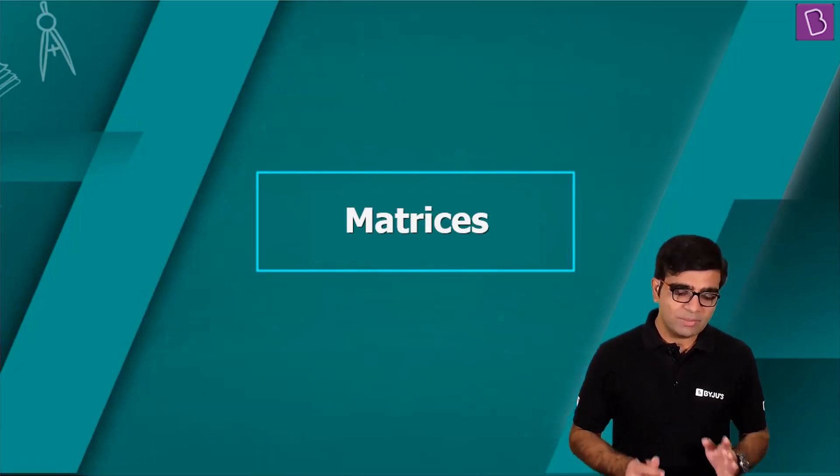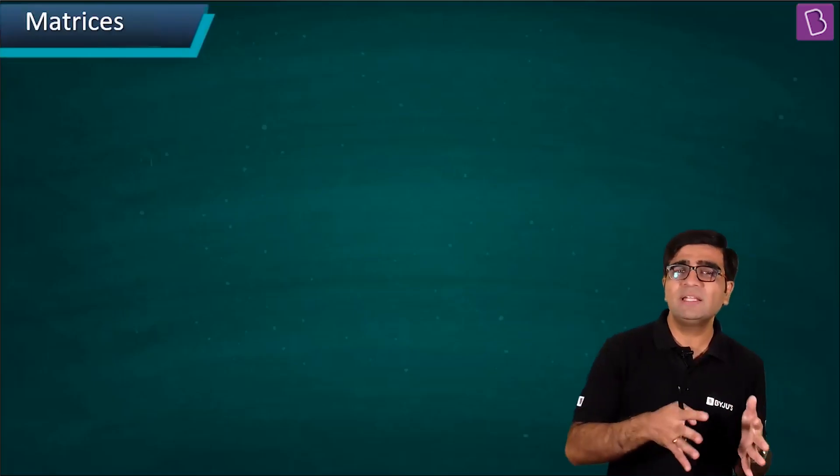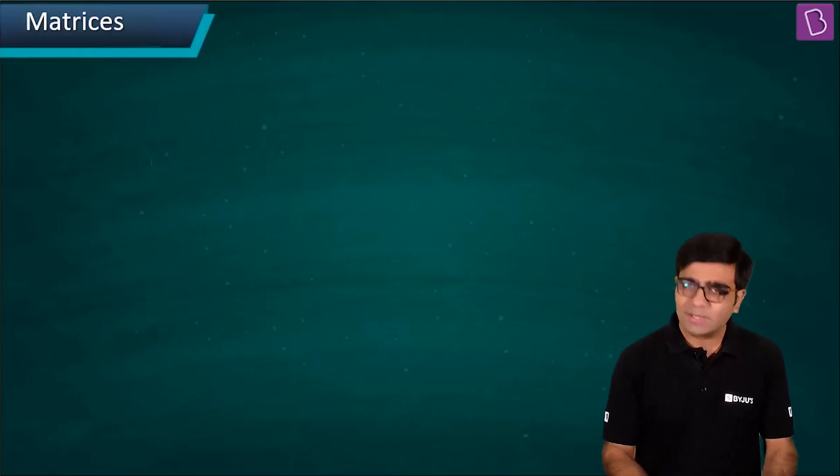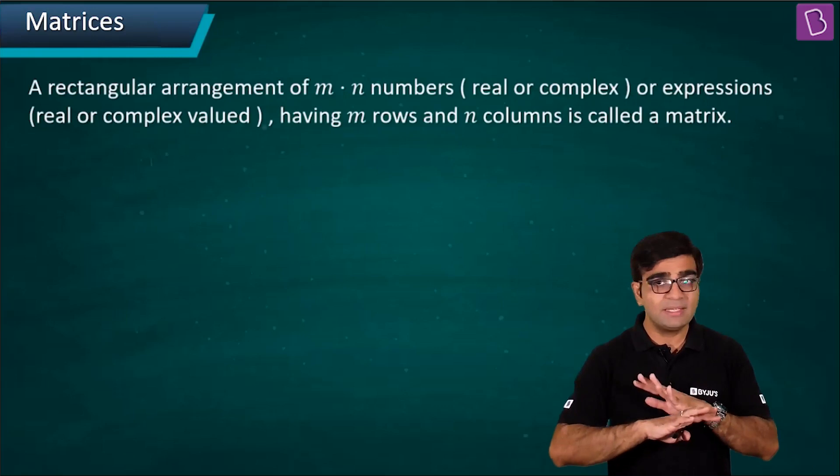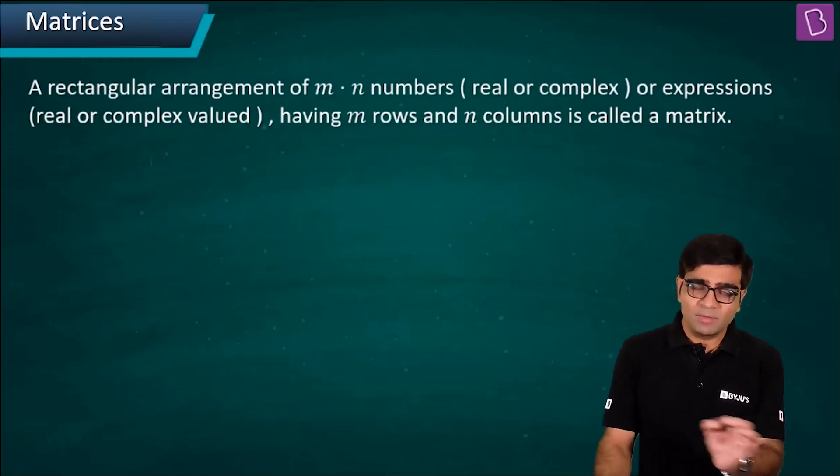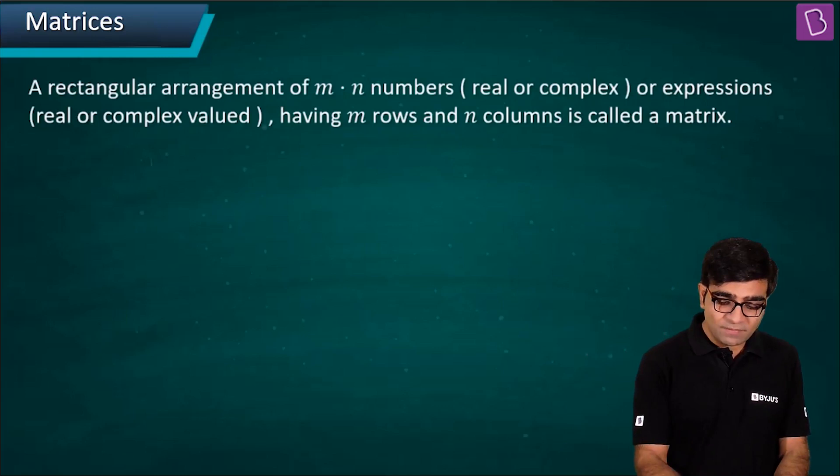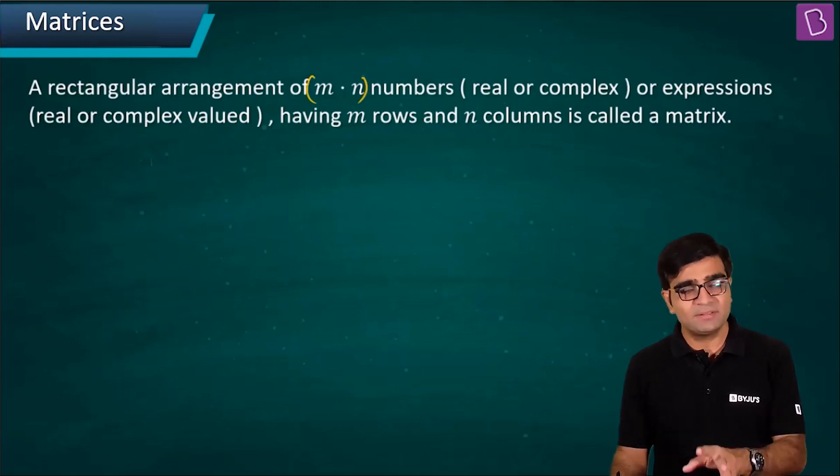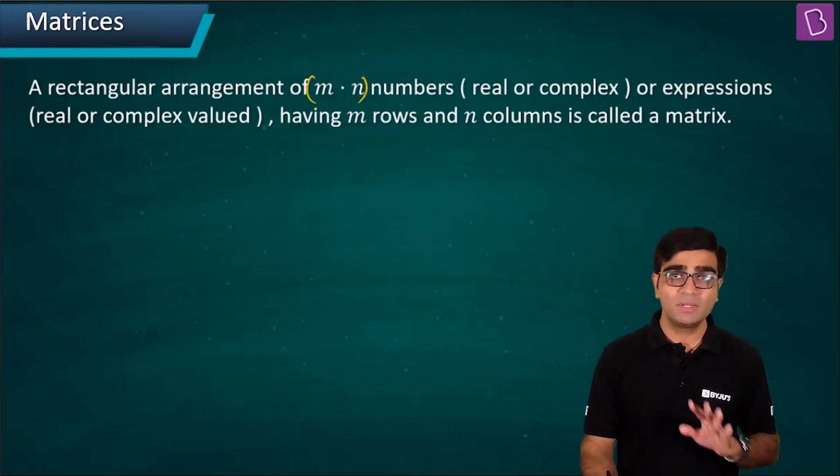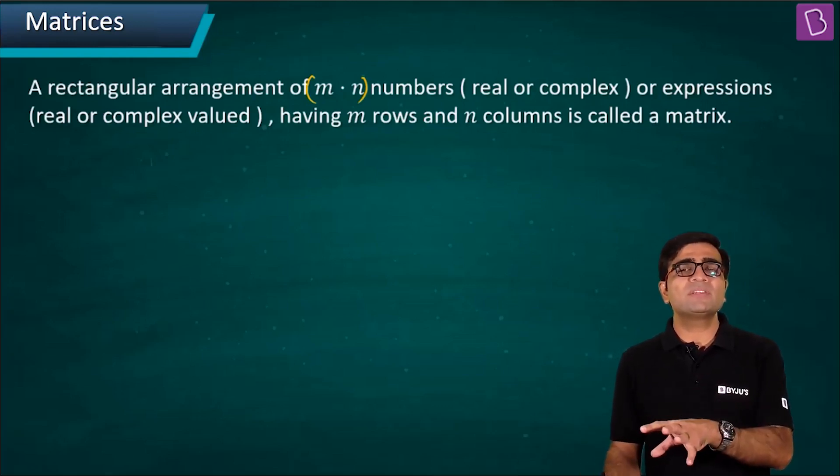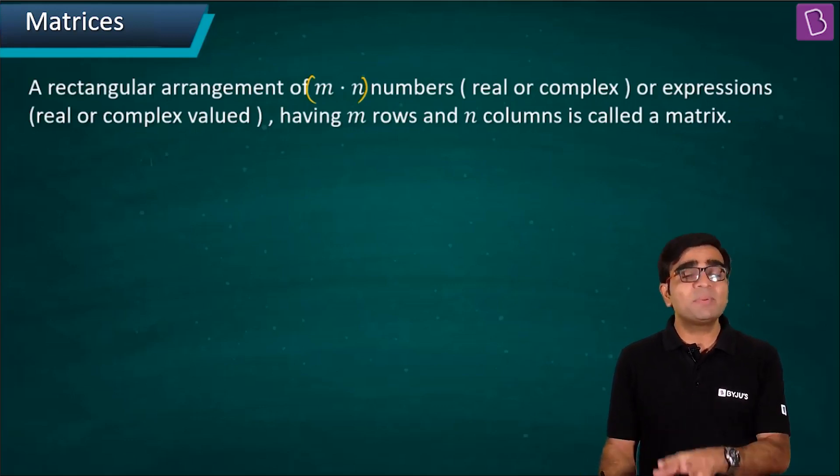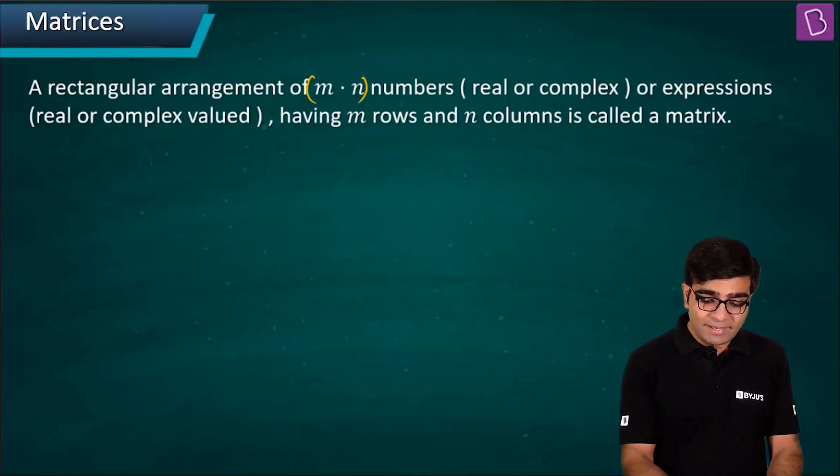Let's see the proper definition. It's the two-dimensional representation of the data set. It's a rectangular arrangement of m into n numbers. It could be real, it could be complex. Matrix can contain real numbers, complex numbers, or expressions. It can contain real or complex expressions also, having m rows and n columns. This is called a matrix.